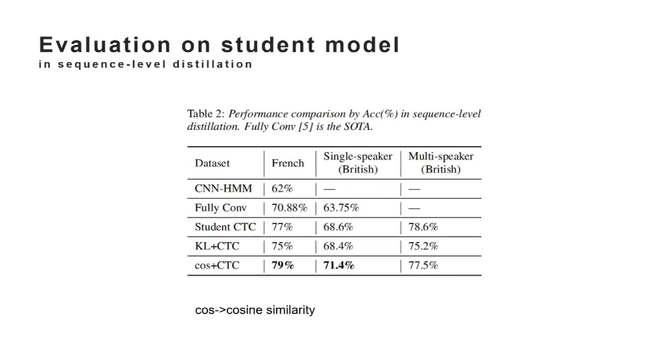For sequence-level distillation, in addition to multi-speaker, cosine performs better than training the student model with CTC alone as an auxiliary loss. It verified that cosine is more suitable for the distillation loss than KL divergence.